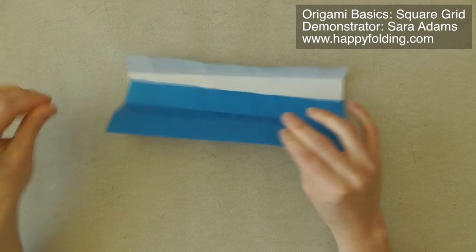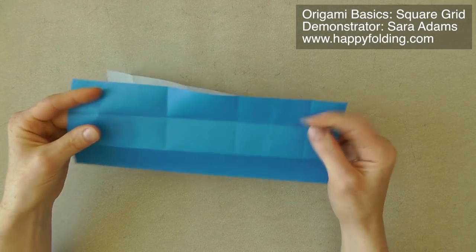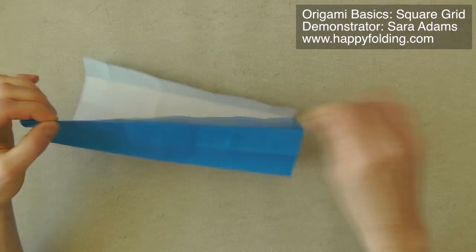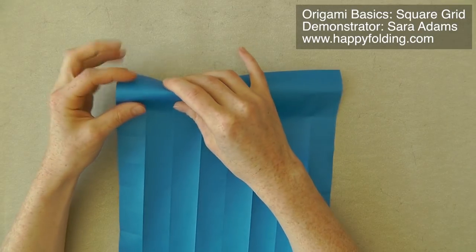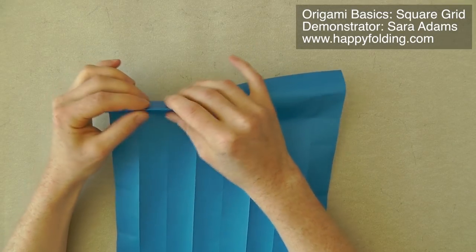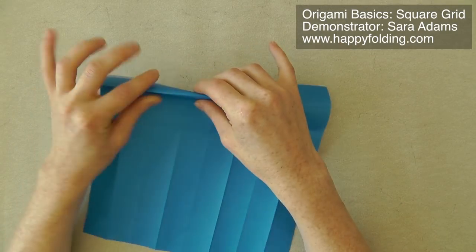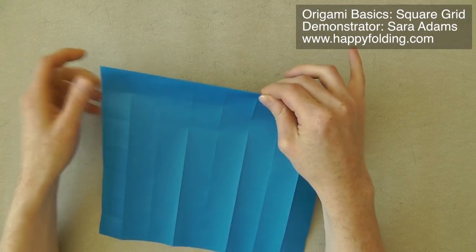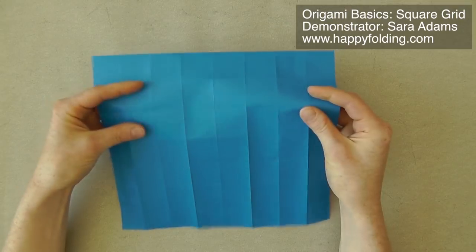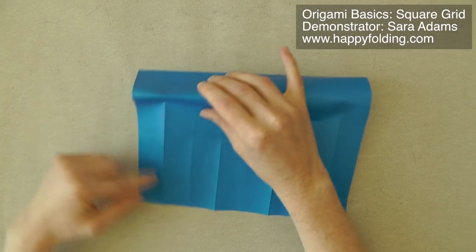Now for tessellations, it's nice if you have valley folds throughout on one side. But for box pleating models, where you also need square grids, you may want to have this zigzag pattern. And then just for the very last iteration, so for example we have eight divisions now.